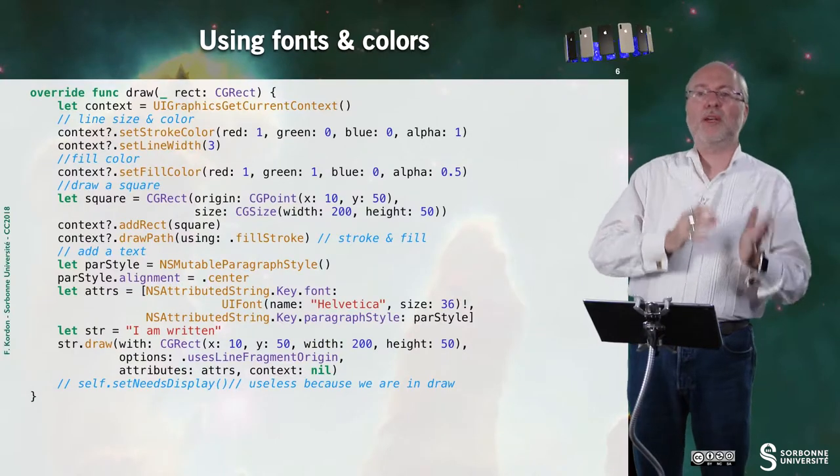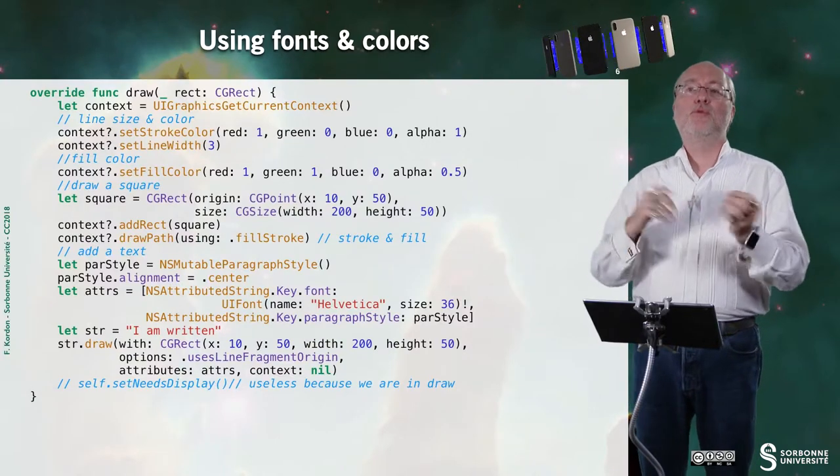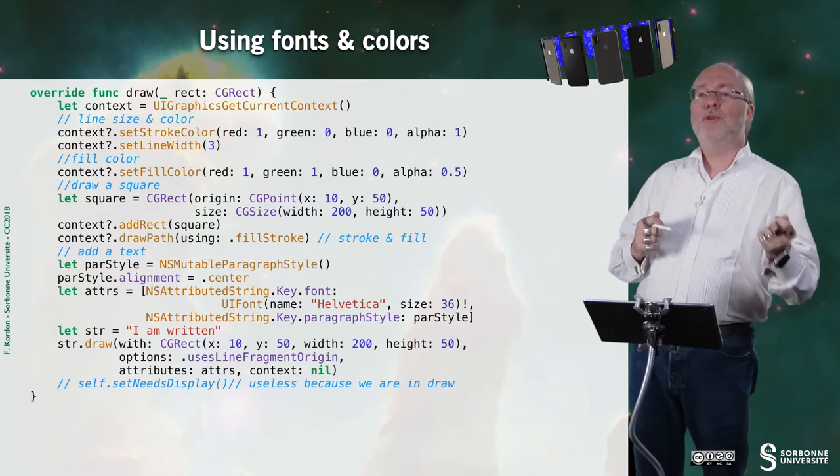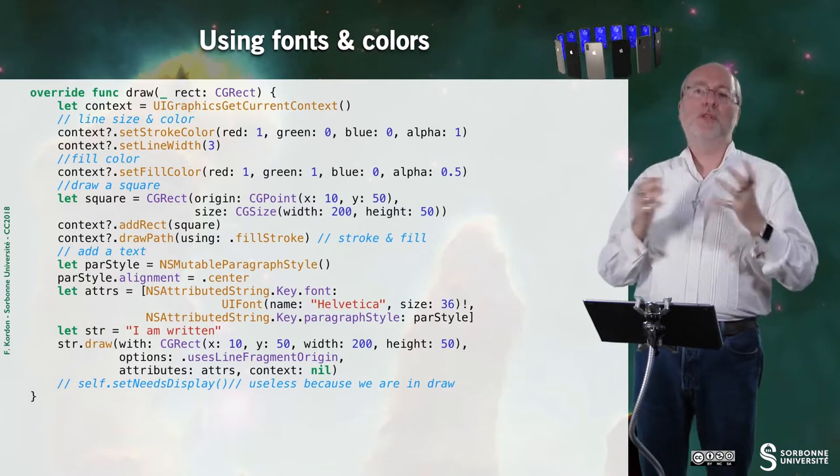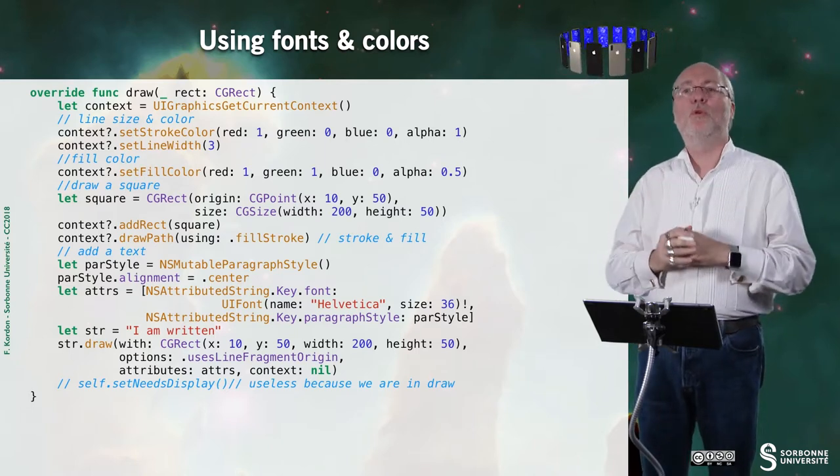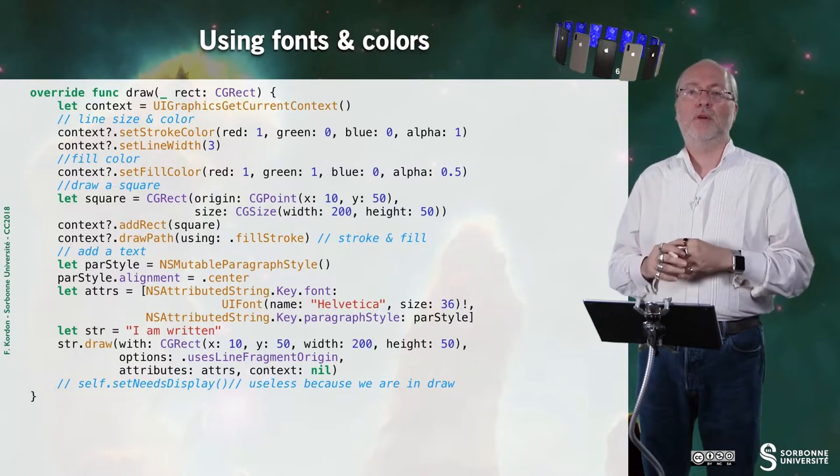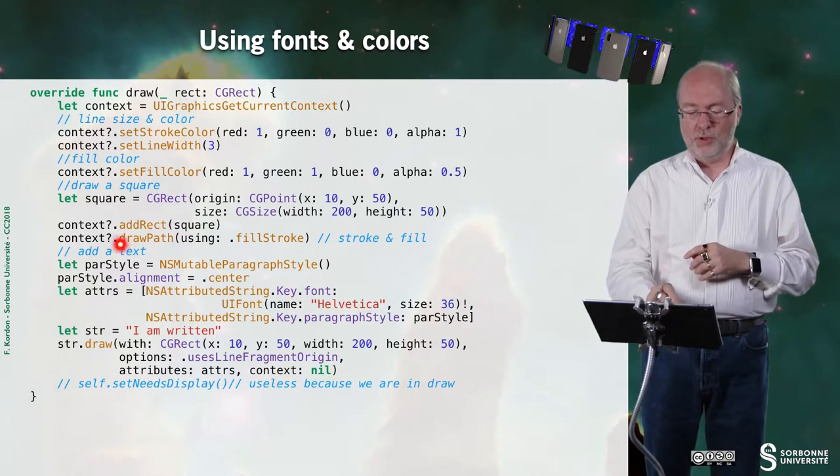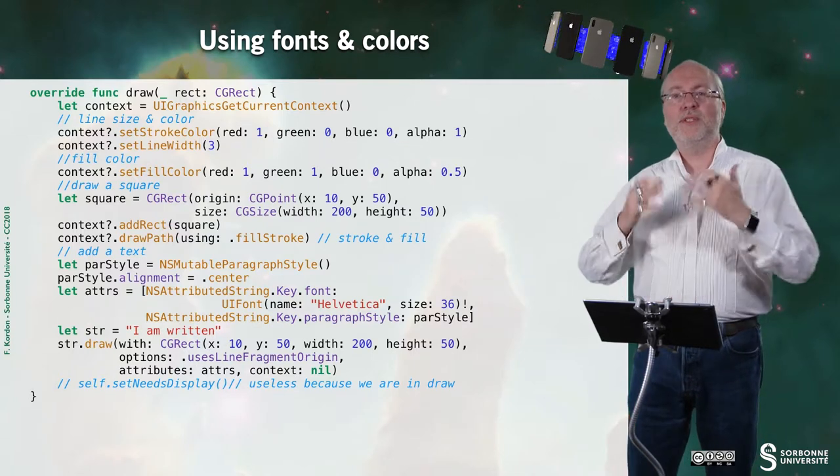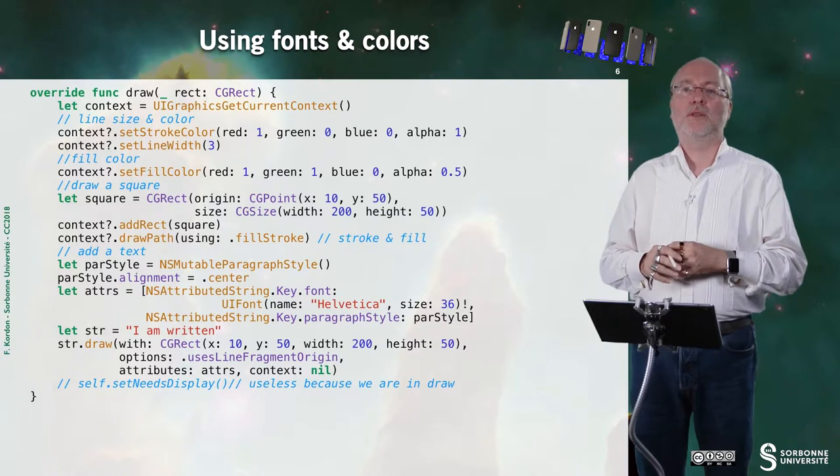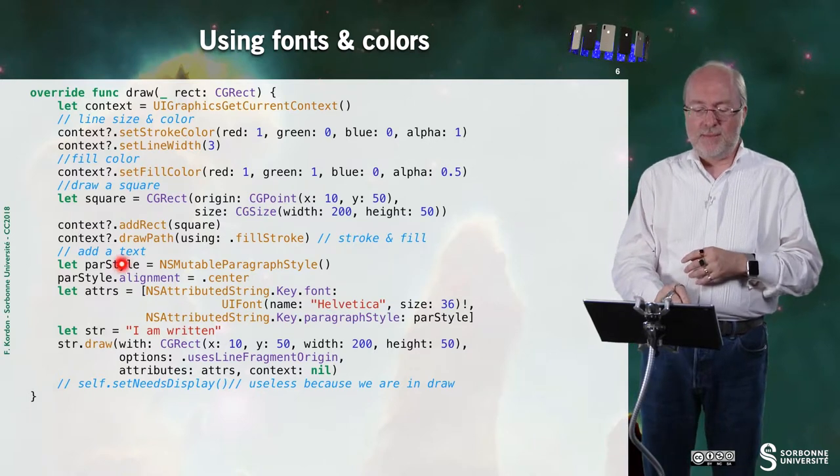Then I request the path to be drawn, but both stroke and fill. So since I have two colors, it will draw the borders in a given color and fill the center of my figure with the other color. So this is a way to tell Core Graphics that I want both to be defined.